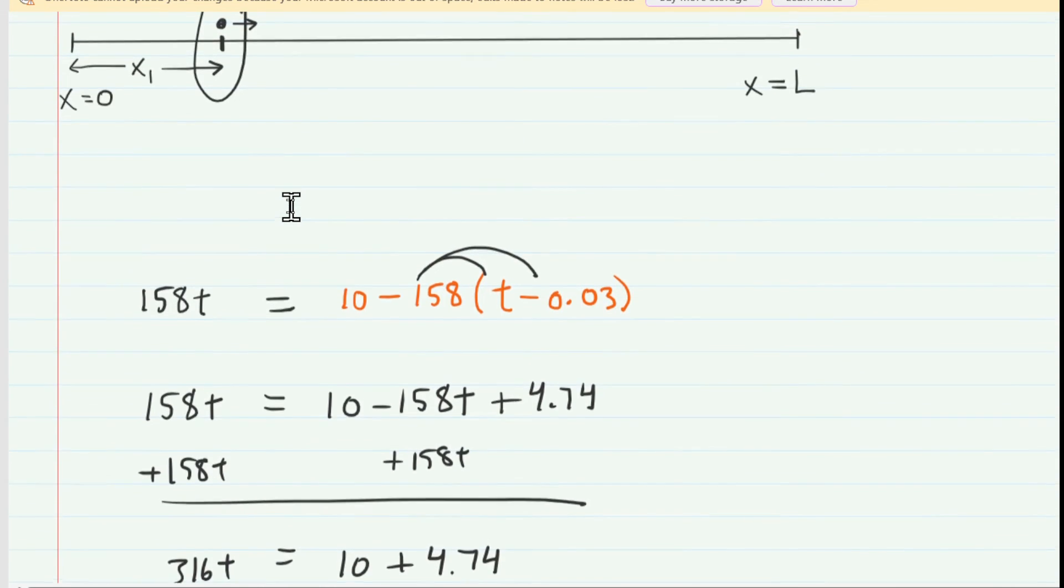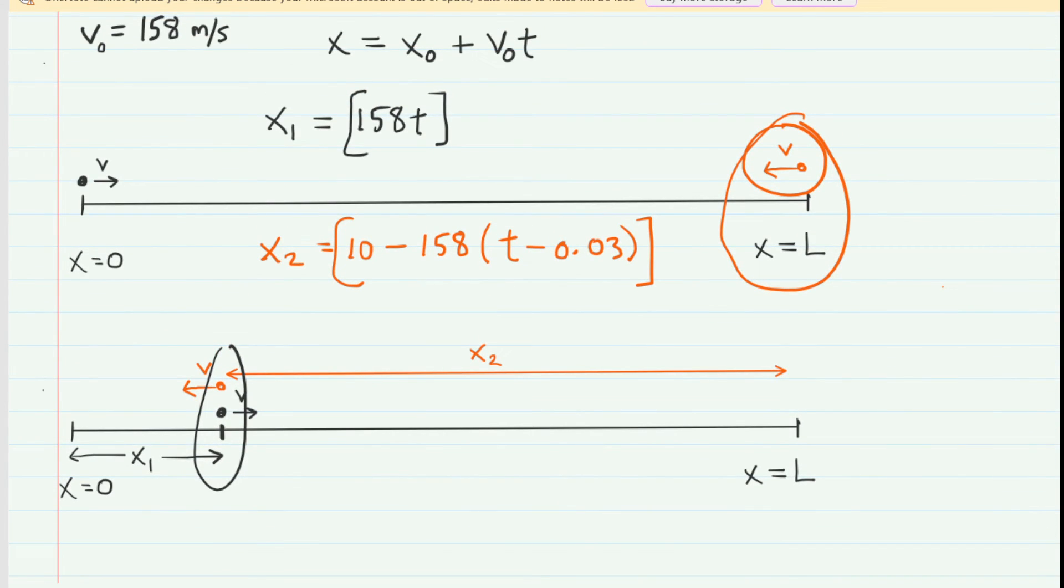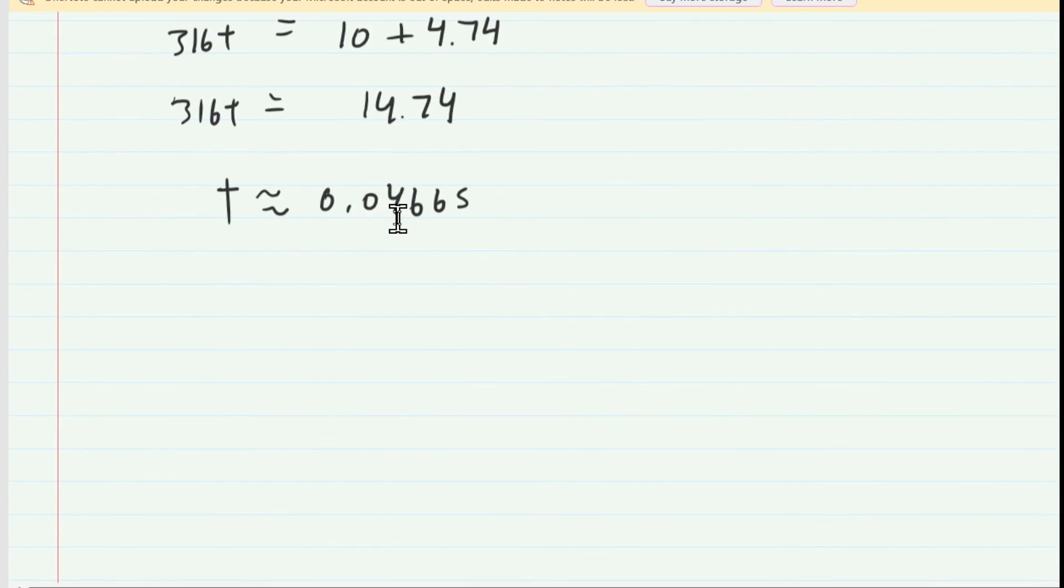Once we have that time, we can go back to any one of our little x-coordinate equations and plug in the time. Of course, the first equation is much simpler. So we're going to take that equation, and we're going to plug in the time we just calculated. That's going to give us the x1. That's the final position of pulse 1, but that's also the final position of pulse 2. That would equally give us the value of x2. So let's go ahead and use that simpler equation and calculate x1.